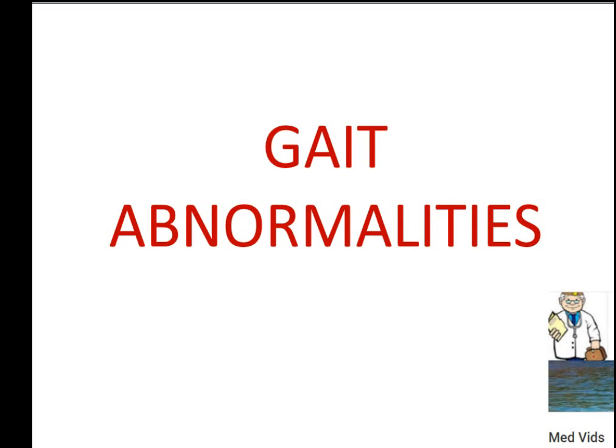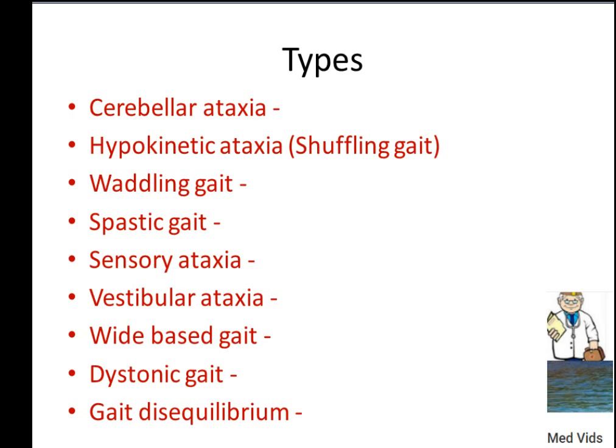Hi, welcome to my channel. I'm going to talk brief and precise about gait abnormalities for exam purpose only — things that are important for your exam like USMLE. The types we'll cover are: cerebellar ataxia, hypokinetic ataxia (shuffling gait), waddling gait, spastic gait, sensory ataxia, vestibular ataxia, wide-based gait, dystonic gait, and gait disequilibrium.